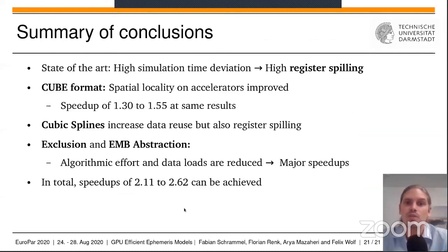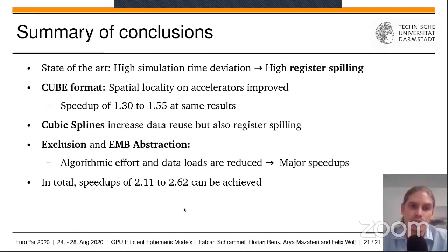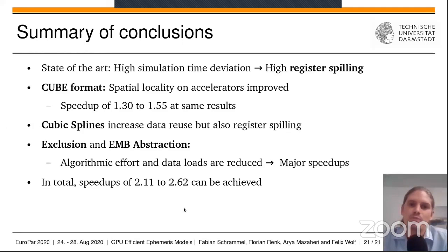To conclude this presentation: the main issue of trajectory simulations on GPUs is the high data load when the simulation time diverges, causing extensive register spilling. The cube format can decrease this effect by adjusting the spatial locality and achieves a good speedup. Cubic splines increase the data reuse but also register spilling, while exclusion and EMB abstraction reduce both algorithmic effort and data loads. In total, speedups of up to 2.62 are achieved for lower accuracy models. Thank you for watching.